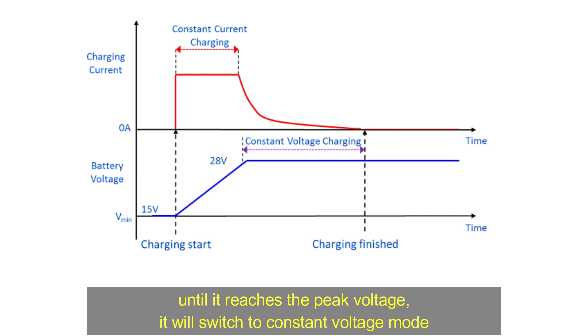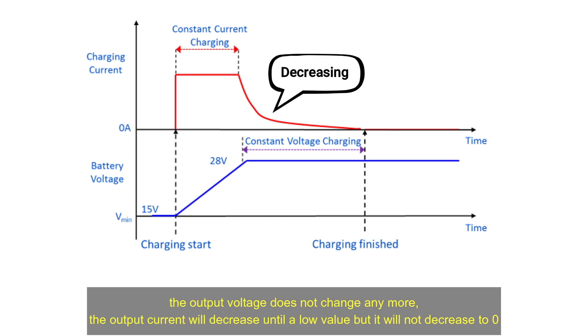It will switch to constant voltage mode. The output voltage does not change anymore. The output current will decrease until a low value, but it will not decrease to zero since what shows in this picture.